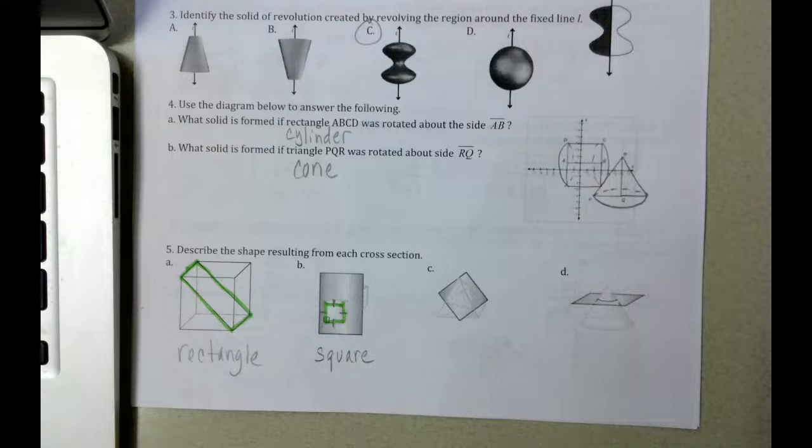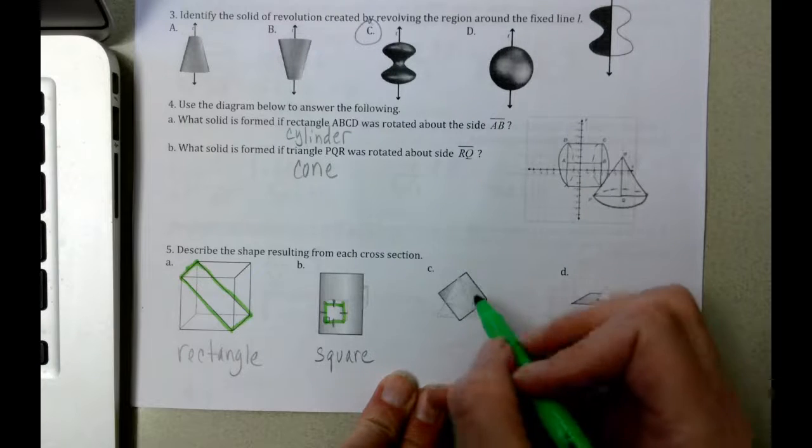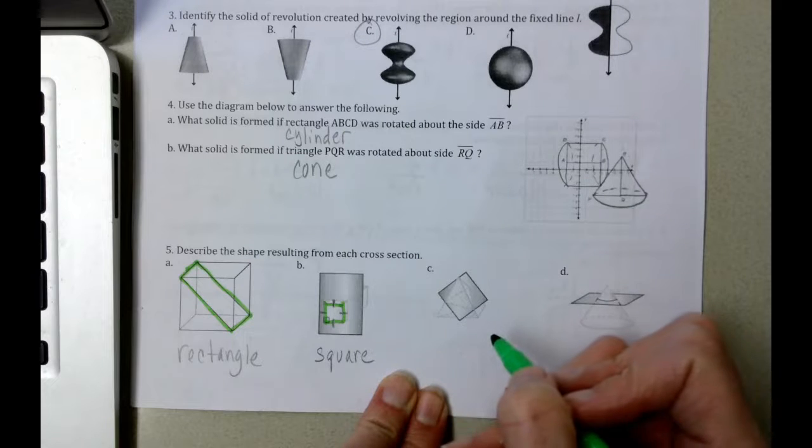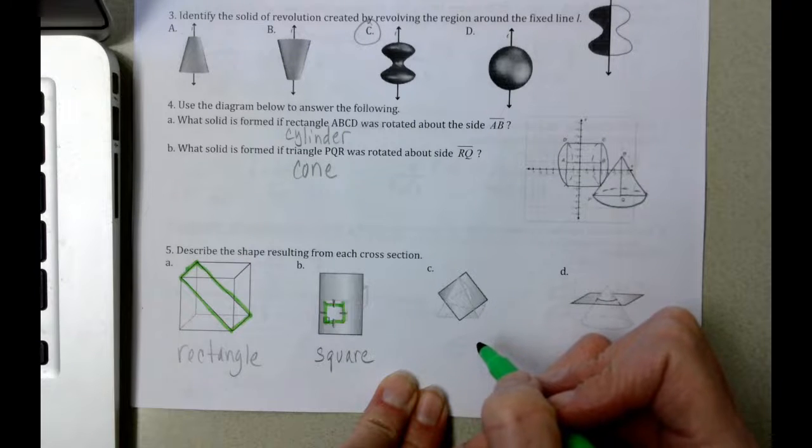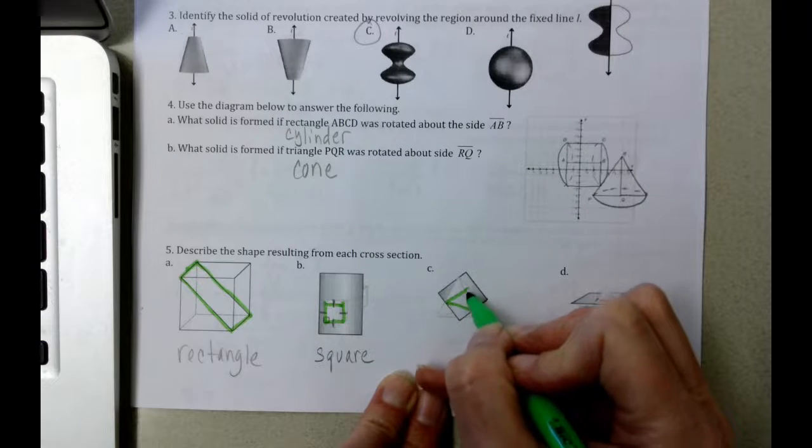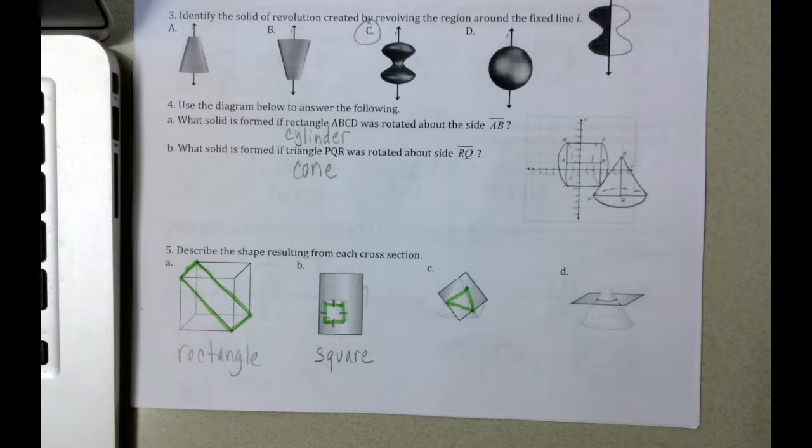On our next one here, as we look at the cross section, this one was hard for me to see, but I think that we are looking here. It's a triangle.